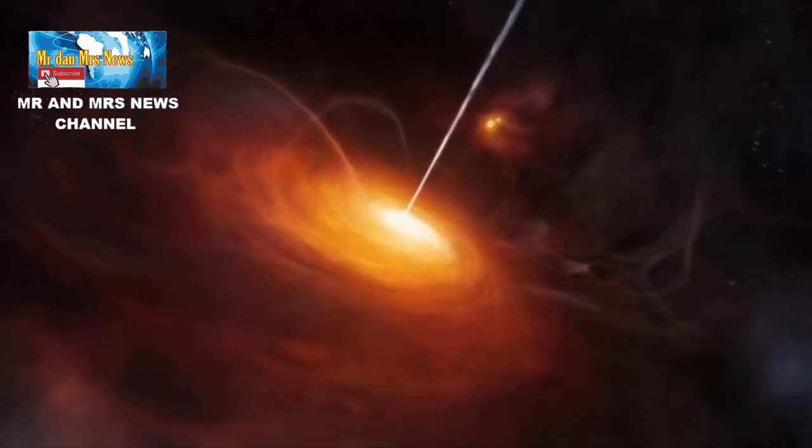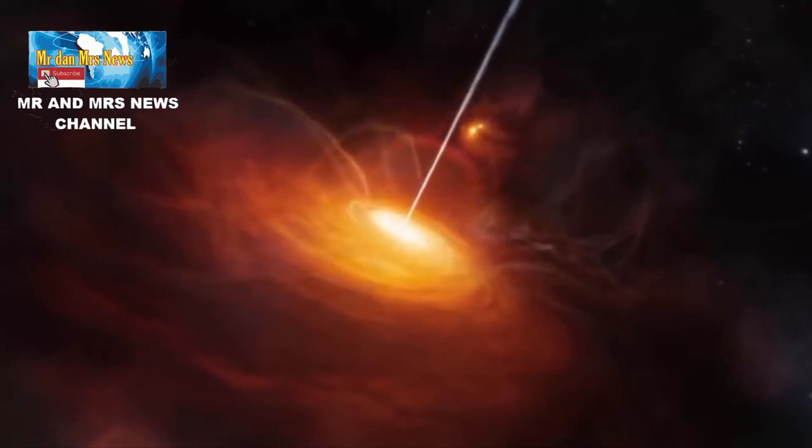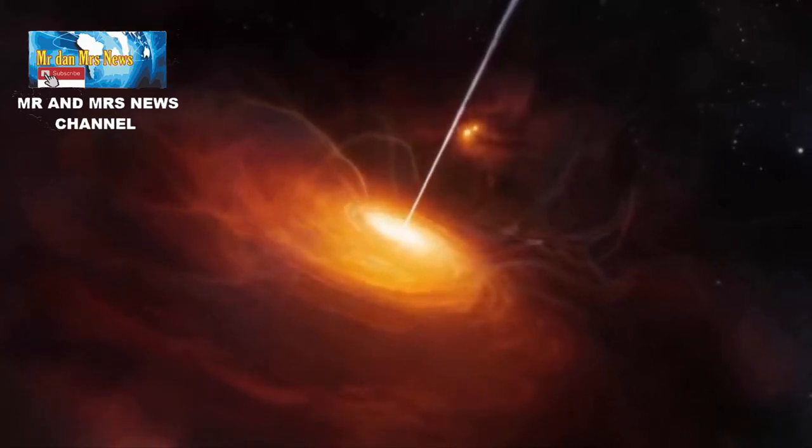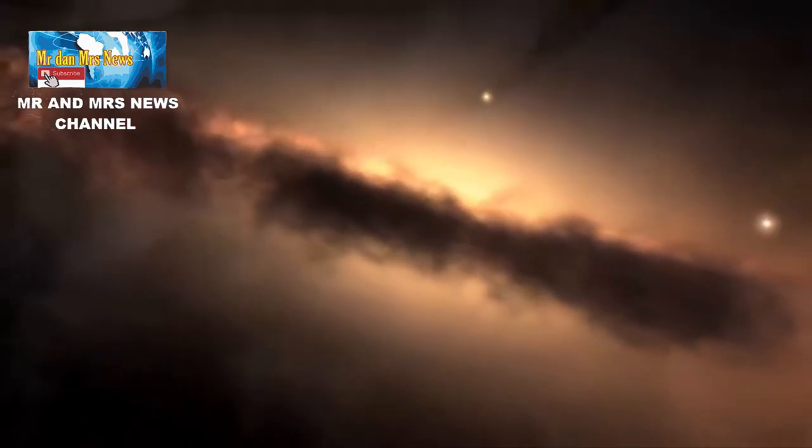Pada mulanya bintang terbentuk dengan kondisi di mana tingkat radiasi dan gravitasinya seimbang. Saat bintang kehabisan bahan bakar untuk melakukan fusi, tingkat radiasi keluar semakin melemah dibanding dengan gaya gravitasi ke dalam.